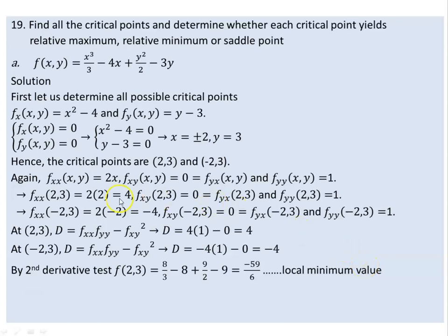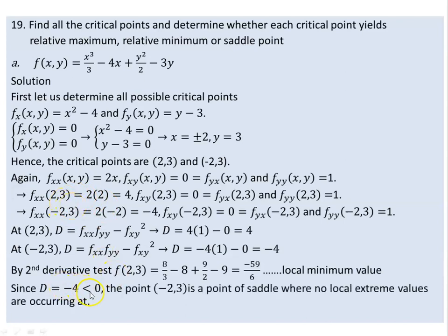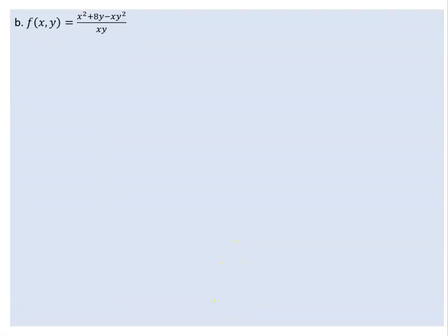D positive and Fxx negative at (−2, 3) gives a local maximum. If D is negative, we call that point a saddle point — a point where we don't have local extreme values. So: D positive and Fxx positive → local minimum; D positive and Fxx negative → local maximum; D negative → saddle point.